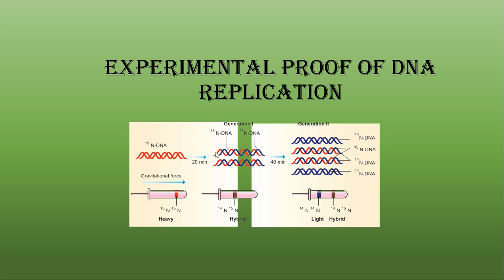Here I explain using a diagram. This is a DNA which is labeled with heavy isotope nitrogen-15, and it undergoes DNA replication after 20 minutes. You can see it's a parental strand — the red color — and each parental strand produces a complementary new daughter strand labeled with nitrogen-14, which is the common light isotope nitrogen source. Nitrogen-15 red color is the heavy isotope.